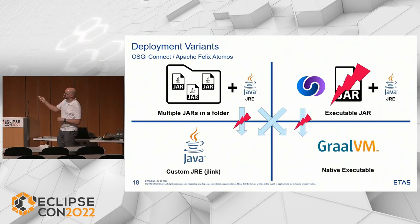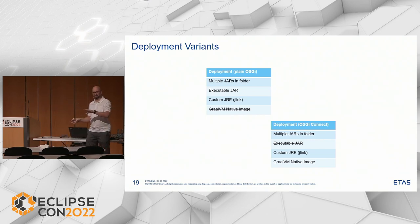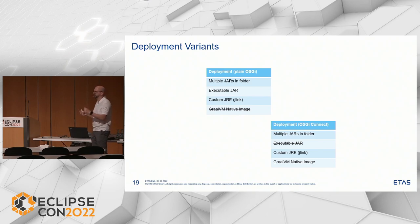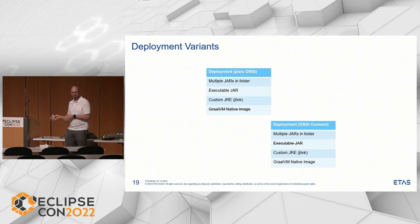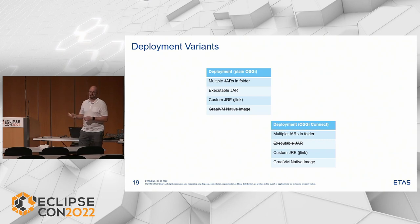So combining both pictures — plain OSGI and with Atomos — I can have six different deployment variants. With plain OSGI: multiple JARs in a folder, an executable JAR, and a jlink image (but no GraalVM). With Atomos integrated: multiple JARs in a folder, the executable JAR currently doesn't work, a custom JRE via jlink, and a GraalVM native image.